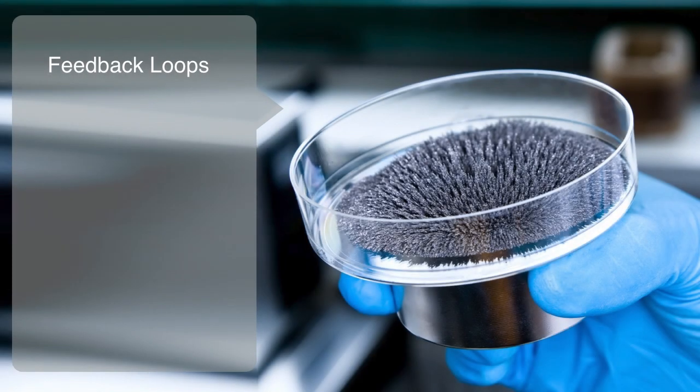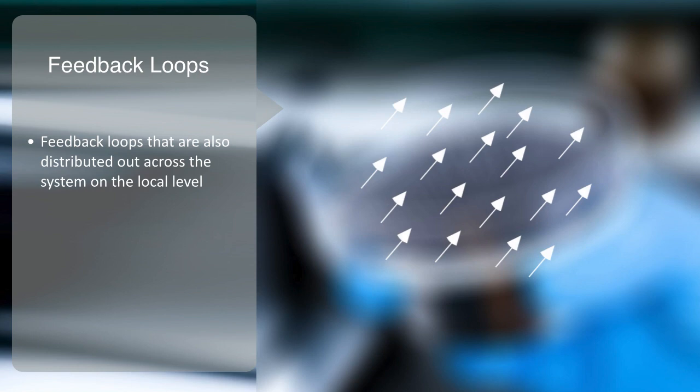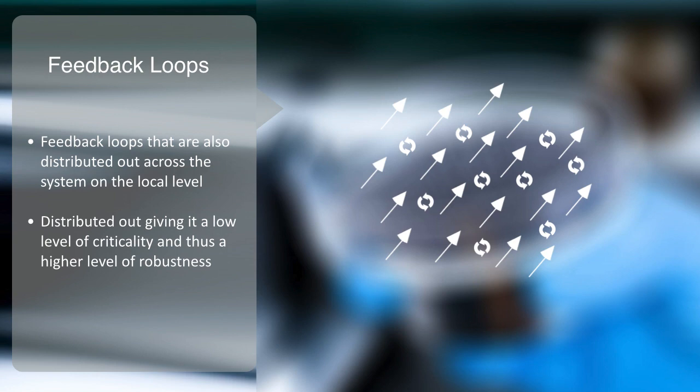Secondly, self-organizing systems are held within their current configuration by a set of feedback loops that are also distributed out across the system on the local level. A good example of this might be a magnet which consists of many tiny magnetic spins that are aligned to produce an overall magnetic force. If part of the spins are knocked out of their alignment, the magnetic field produced by the rest of the spins will quickly pull them back. This force maintaining the system within its current configuration is distributed out again, giving it a low level of criticality and thus a higher level of robustness.